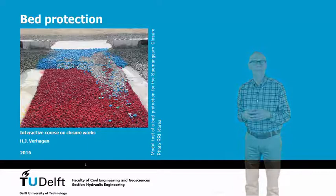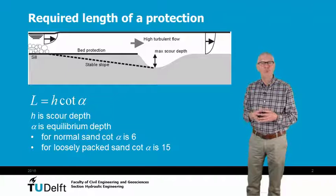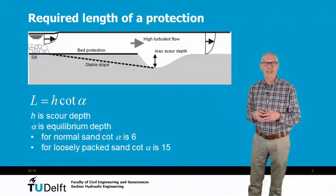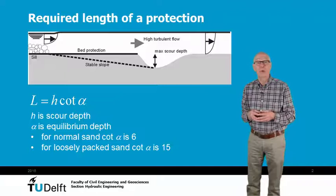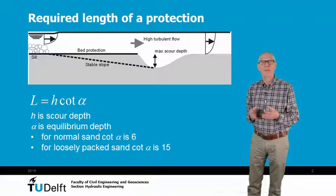The main purpose of a bed protection is to keep the scour hole sufficiently far away from the structure. The flow over the sill has a high velocity and is very turbulent. This causes the scour hole. When the depth of the hole is known, and the stable slope for the subsoil is also known, one can calculate the required length for bed protection.